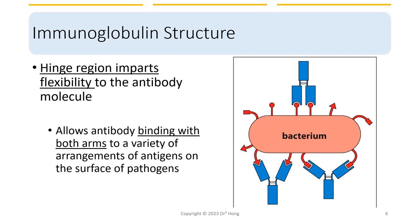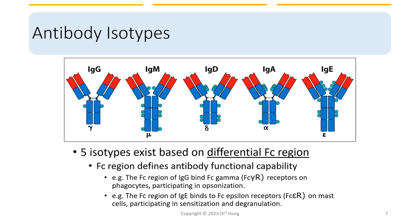The graph here shows three different antibodies binding with both arms to antigens at different distances apart. Last time we mentioned the differences between the five antibody isotypes were based on different Fc regions. In fact, the Fc region also defines antibody functional capability. For example, the Fc region of IgG binds to Fc gamma receptor on phagocytes and participates in opsonization. In comparison, the Fc region of IgE binds to Fc epsilon receptors on mast cells and leads to sensitization and degranulation during an allergic reaction.